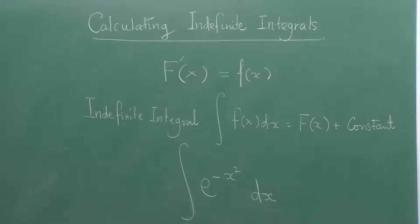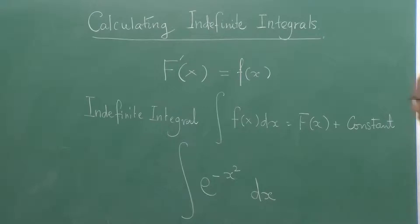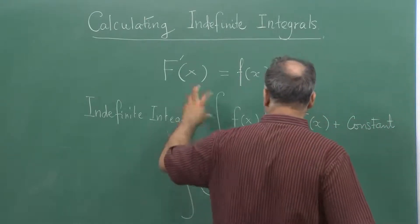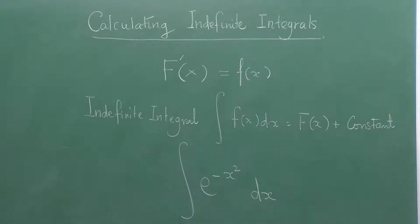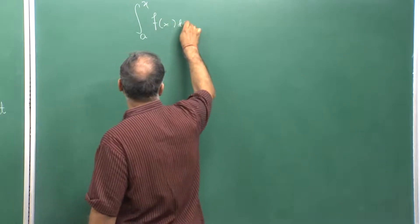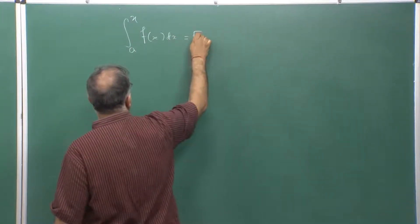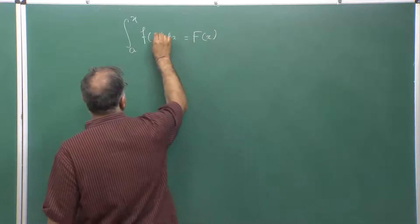If the function f is continuous, you can always have such primitives. For a continuous function, if you can find a function A(x) the way we did using the mean value theorem, then capital F works. If F is a continuous function and differentiable, then F can be expressed as the integral from a to x of F(t) dt.